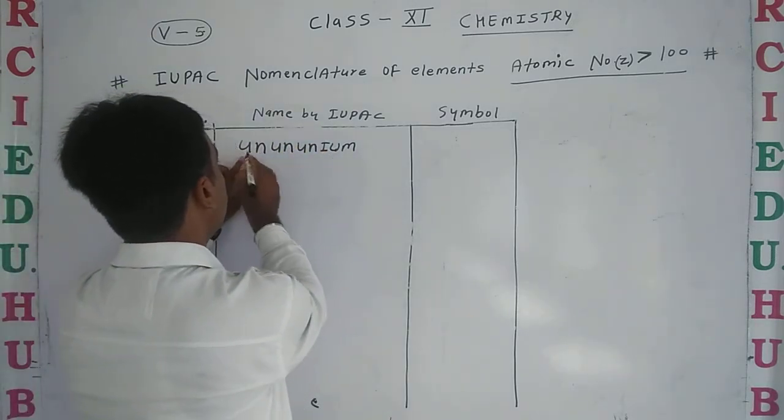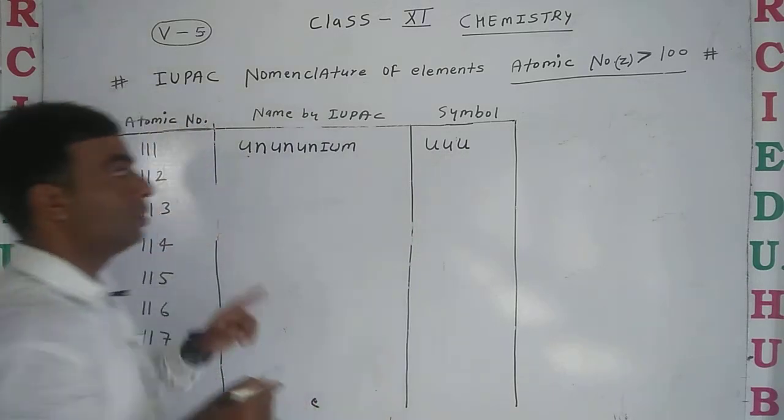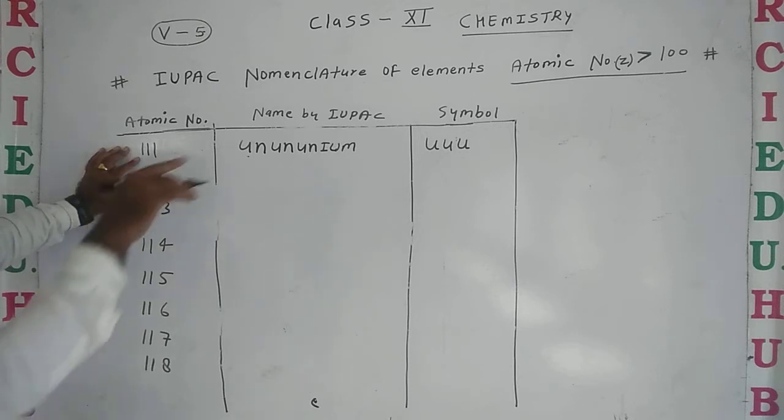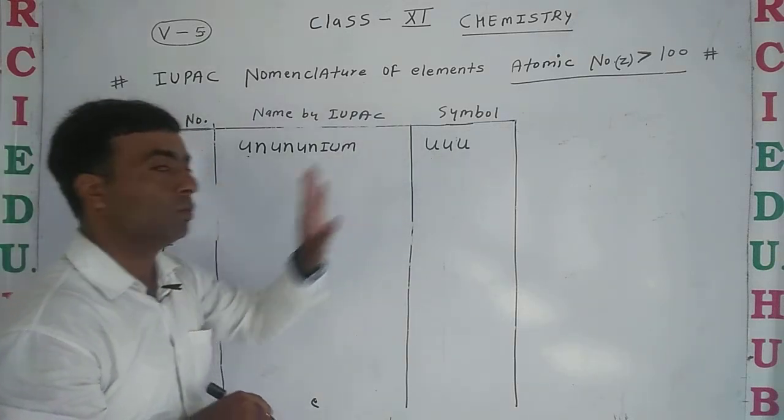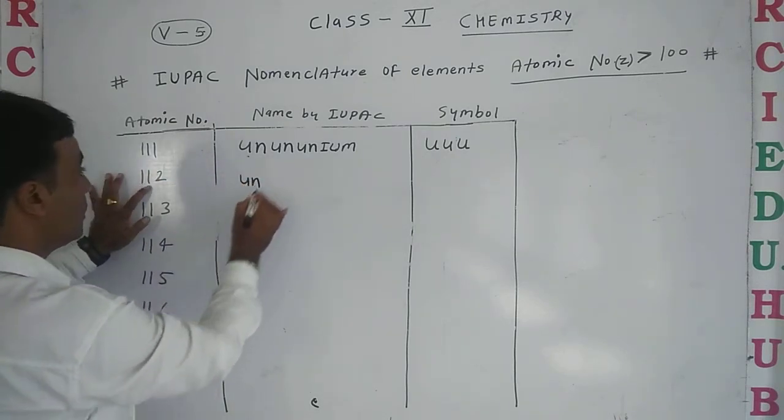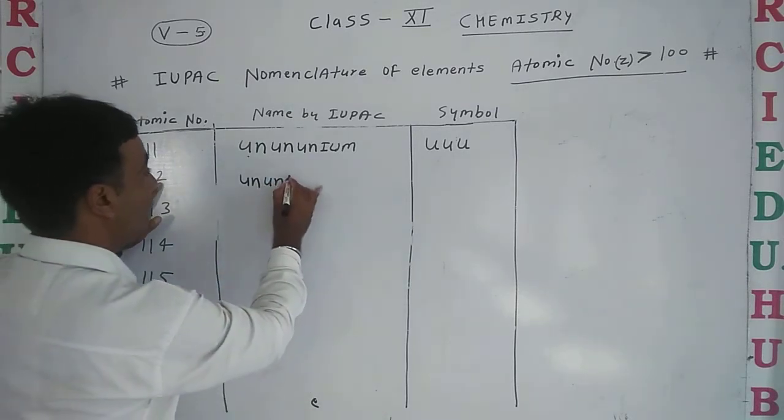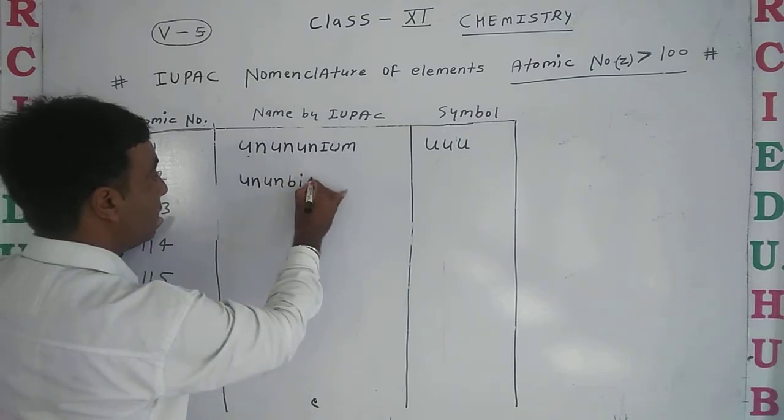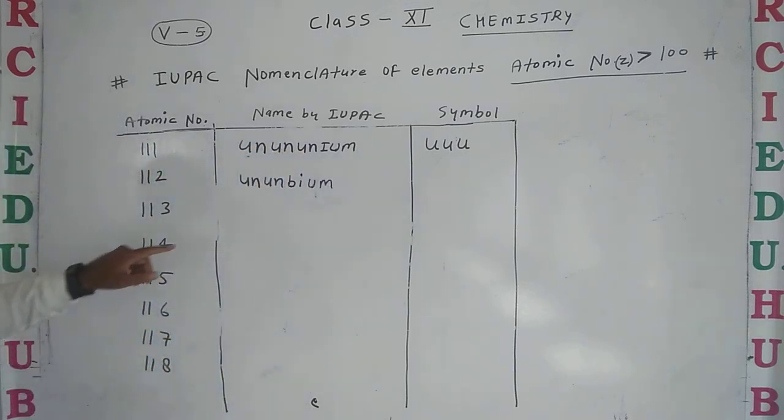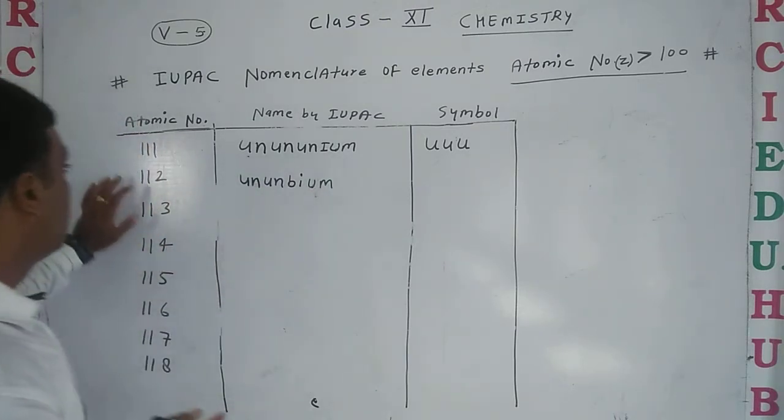Its symbol will be first letter U, next U, and next U - triple U, because here is also triple one. So there will be Uuu. Next is 112 - 'un' 'un' and for 2 we use 'bi'. So 'bi' and suffix '-ium', that means ununbium.